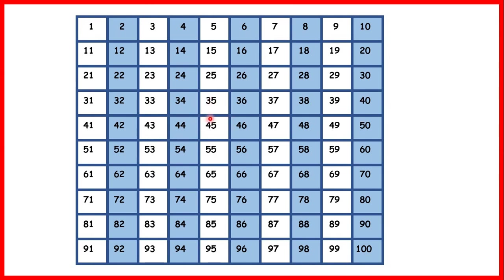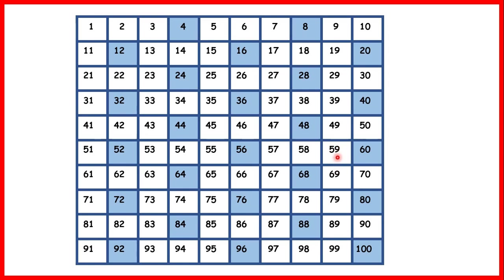Now we can show our 100 square, where we have our 2 times table highlighted. The 2 times table makes a really clear pattern — numbers ending in 2, 4, 6, 8, or 0 shaded in. Now, let's show multiples of 4 on our 100 square. Again, you can see a pattern, and just like with the 2 times table, multiples of 4 always end in 2, 4, 6, 8, or 0. So if a number ends in 1, 3, 5, 7, or 9 — if a number is odd — we know it's not going to be in the 4 times table.